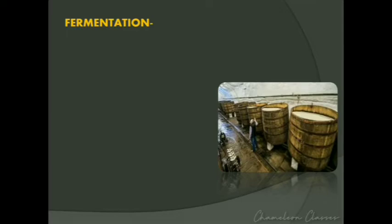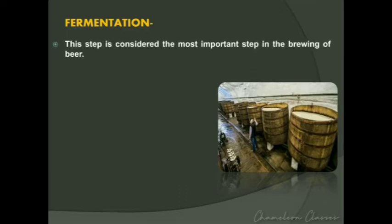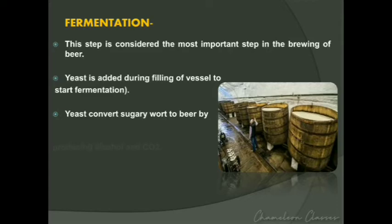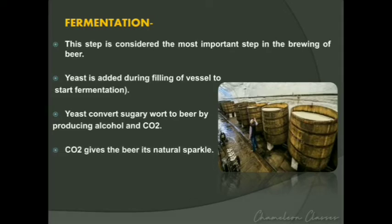The sixth and most important step is fermentation. To start fermentation, yeast is added during the filling of the vessel. The yeast converts the sugary wort into alcohol and carbon dioxide. The carbon dioxide produced gives the beer its natural sparkle. This is an anaerobic process that produces both alcohol and carbon dioxide.